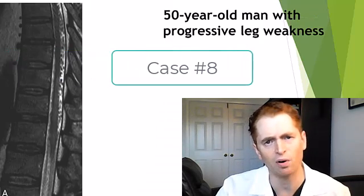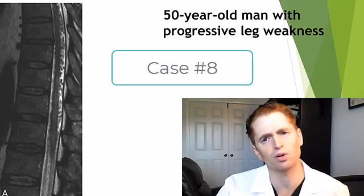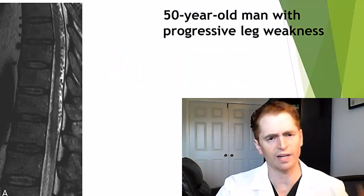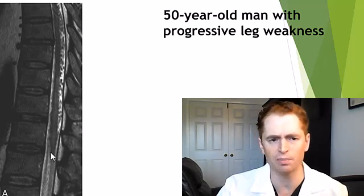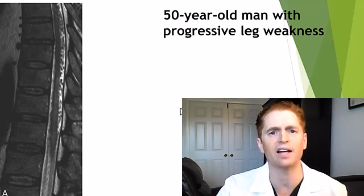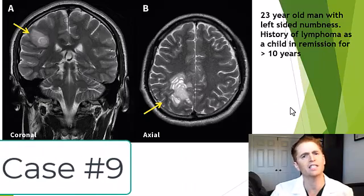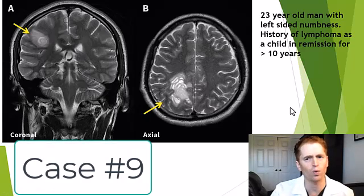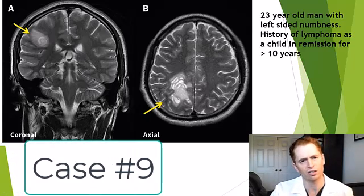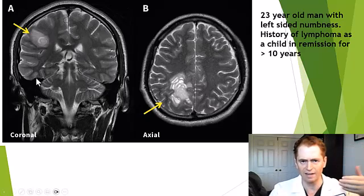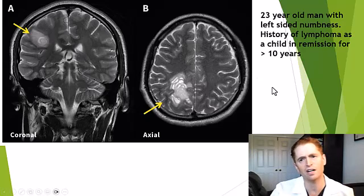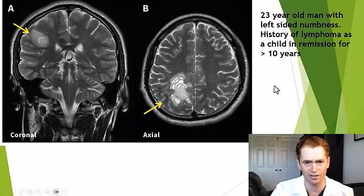Here is a spine MRI of a 50-year-old man with progressive leg weakness. We're looking at sagittal images through the spine. Just to orient you, this is the conus medullaris, the end of the spinal cord. Next is a 23-year-old man with left-sided numbness. These are T2 sequences — a coronal view on the left and an axial view on the right. Of note, he has a history of lymphoma as a child, but in remission for more than 10 years.